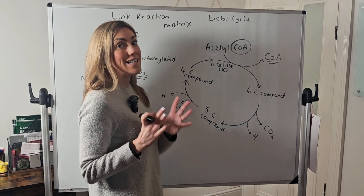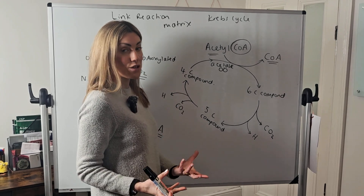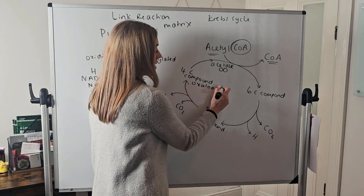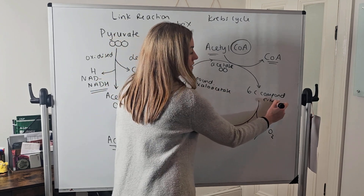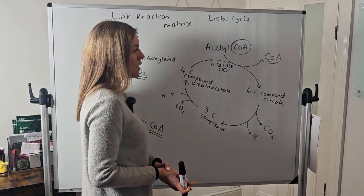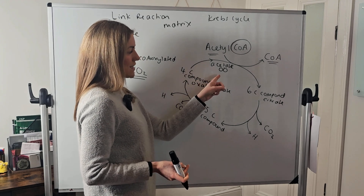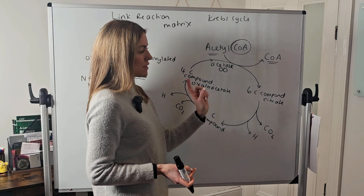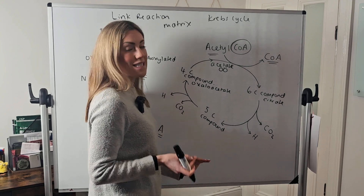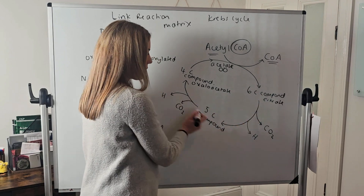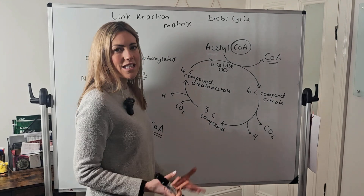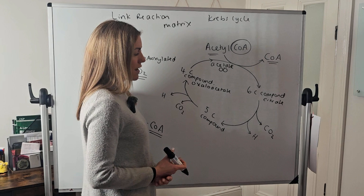For AQA you don't need to know the names of these compounds, although some teachers do teach them. The four-carbon compound is called oxaloacetate and the six-carbon compound is called citrate or citric acid, which is why this is also known as the citric acid cycle. But all we need to say is that the two-carbon acetate joins with a four-carbon compound to make a six-carbon compound, and then we need to get back from the six-carbon compound to the four-carbon compound.